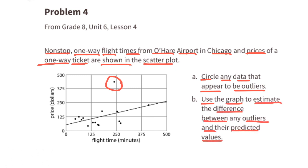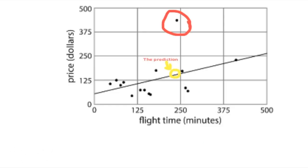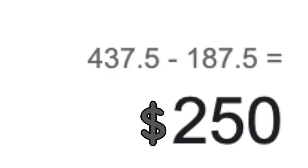Part B: use the graph to estimate the difference between any outliers and their predicted values. The predicted value of this outlier would lie on this line at approximately $187.50, and the outlier is approximately $437.50. That's a difference of $250.